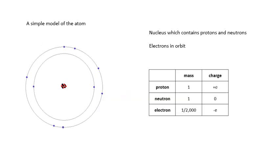A simple model of the atom — our model will get more complicated later. But in the simple model, you've got a very, very small nucleus, and then electrons in orbit around the nucleus. In the nucleus you've got protons and neutrons, which have a relative mass of 1. The electron's mass is much smaller — about a two-thousandth of that. Protons have a positive charge (+e), electrons have a negative charge (−e), and neutrons are neutral.